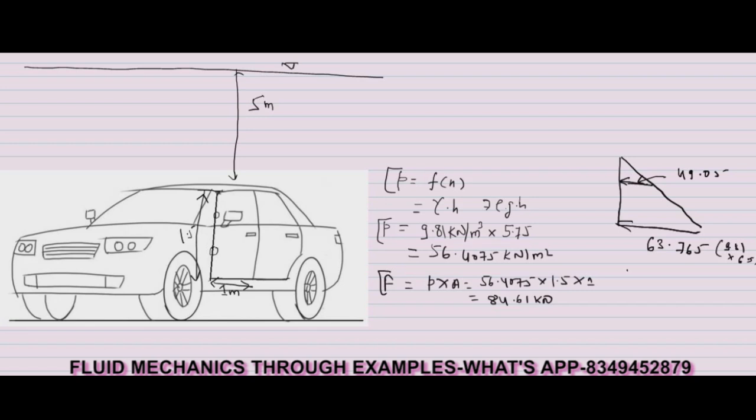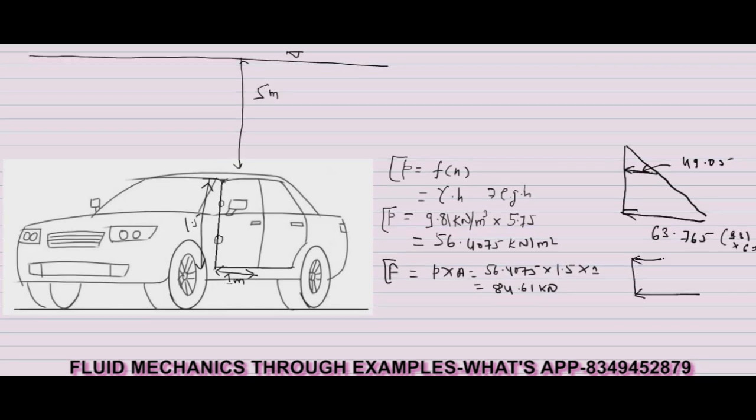You can see your door having this pressure distribution diagram. By solving this trapezoidal you will get the resultant pressure force. You can use the trapezoidal rule to find the area: A plus B by 2 multiplied by H, here H is 1.5 meters. Using this law you can also calculate the force and it will come to be 84.61 kilonewton.